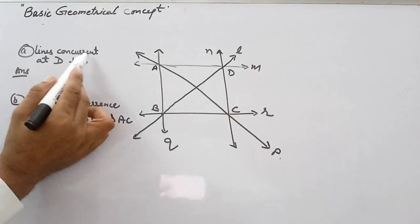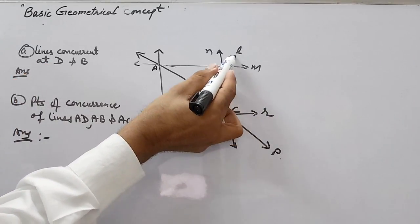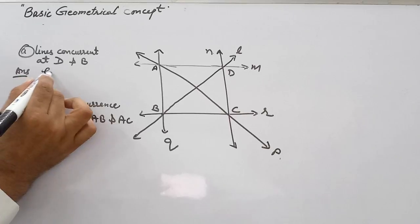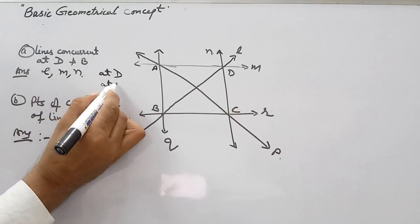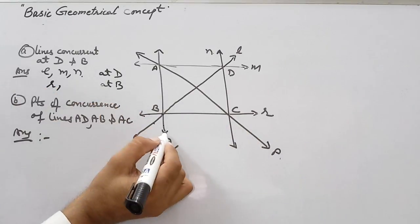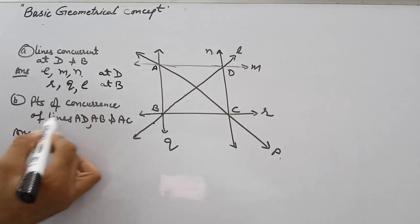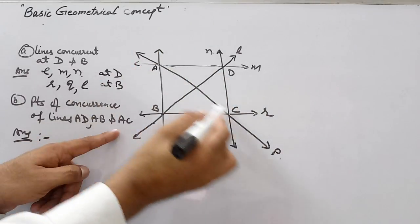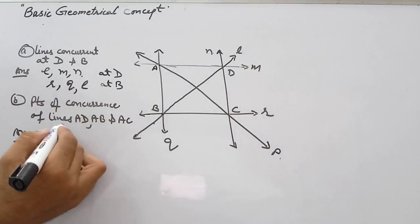Let us solve the concurrent lines question. Lines concurrent at D: on point D there are three lines — L, M, and N — so concurrent lines at D are L, M and N. At point B, three lines are meeting — R, Q, and L — so these are concurrent at point B. Next: the point of concurrence of lines AD, AB, and AC. These three lines are cutting at point A, so the point of concurrence is point A.